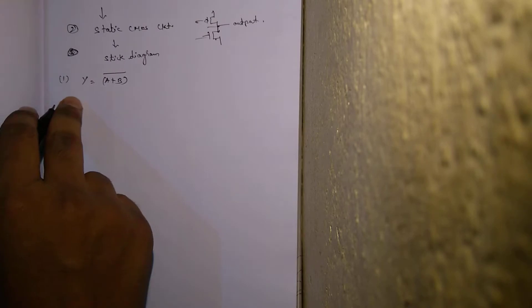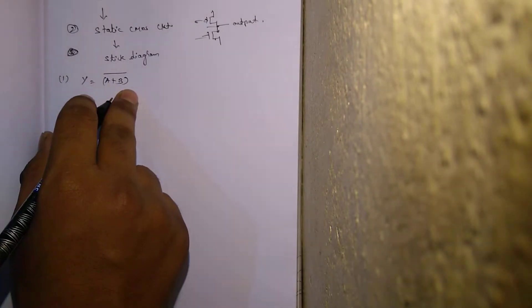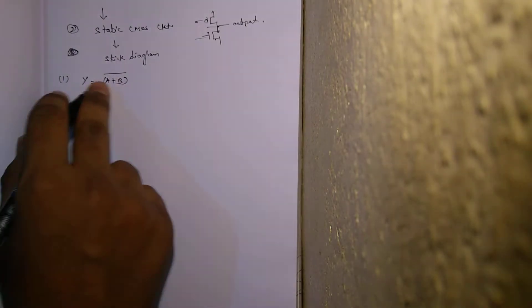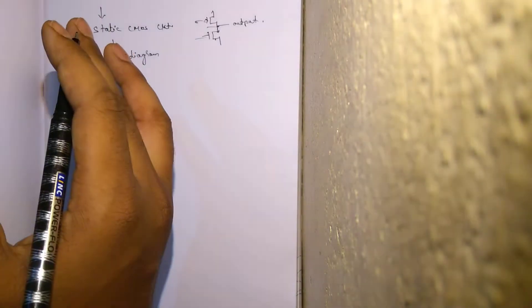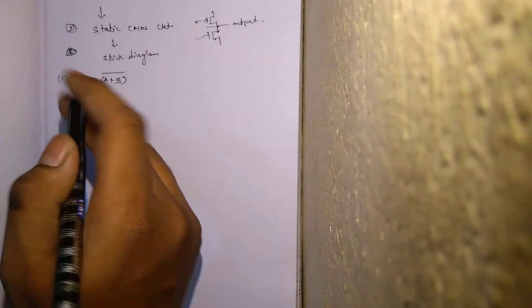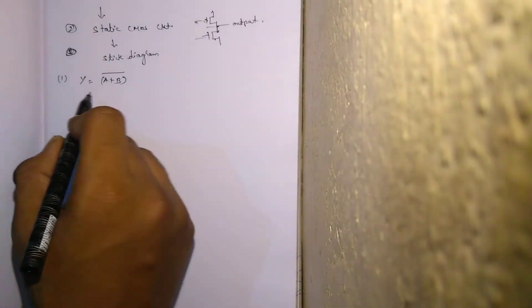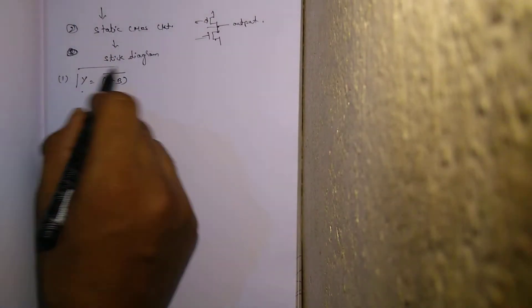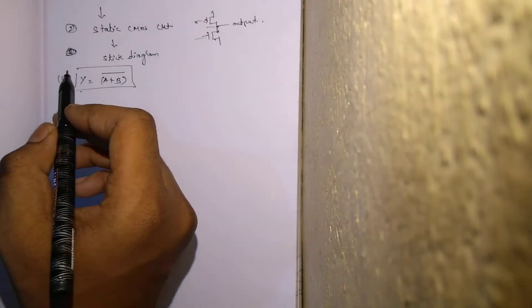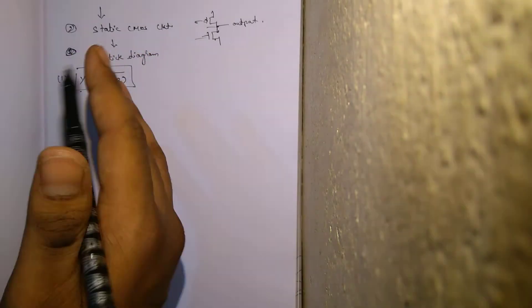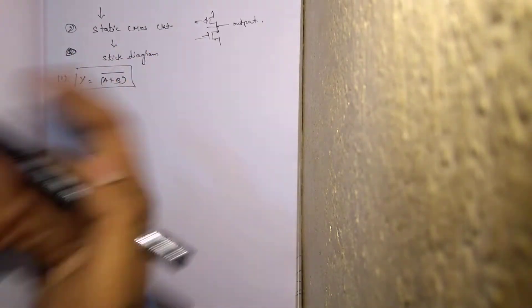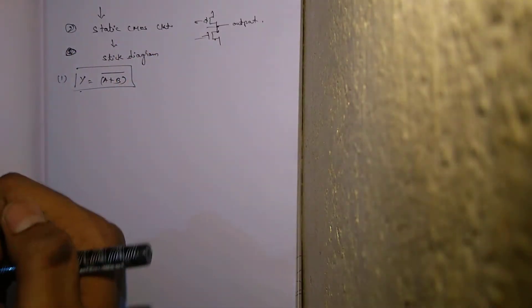A plus B is nothing but A OR B, right? A OR B complement is nothing but NOR. So this is a NOR expression — we are going to draw a stick diagram for a NOR gate here.